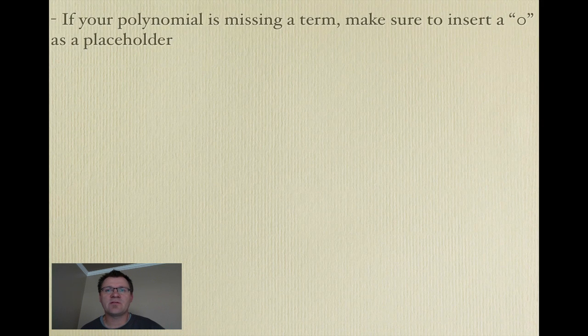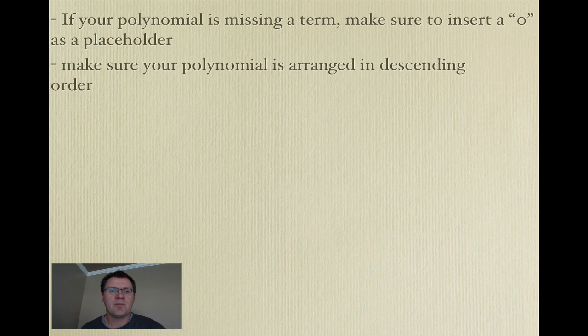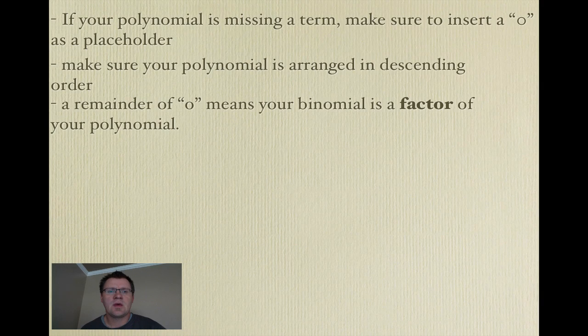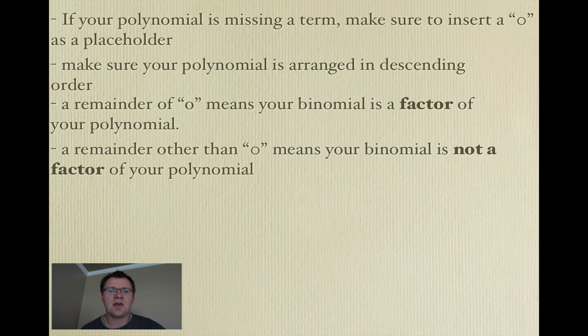A few key things about synthetic division. If your polynomial is missing a term, make sure that you insert a 0 as a placeholder. Make sure your polynomial is arranged in descending order. A remainder of 0 means that your binomial happens to be a factor of that polynomial, and that's really key in upcoming lessons. And a remainder other than 0 means that your binomial is not a factor. It means that that binomial does not go into your polynomial evenly.